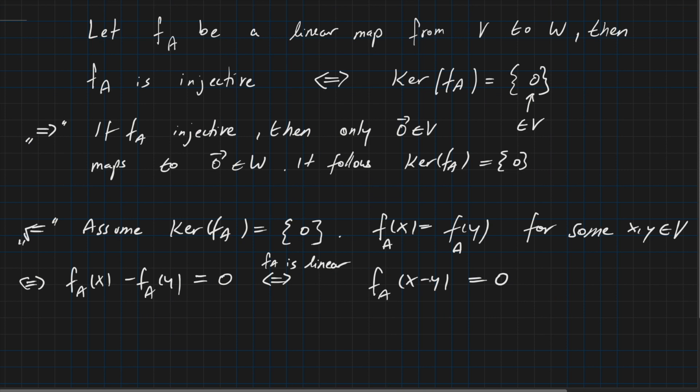So this equality actually tells us x - y as a vector from V is an element of the kernel of FA, because FA maps this element to 0. So it follows x - y is an element of Ker(FA).